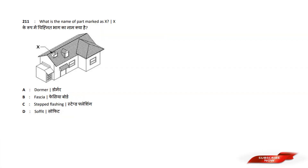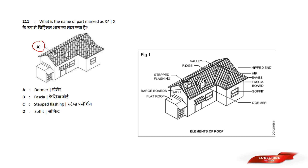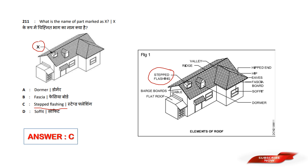What is the name of the part marked as X? Answer option C is Step Flashing. Step flashing is the name of the part marked as X. Answer option C.